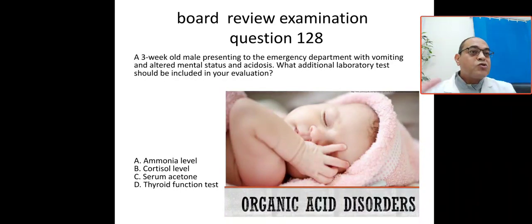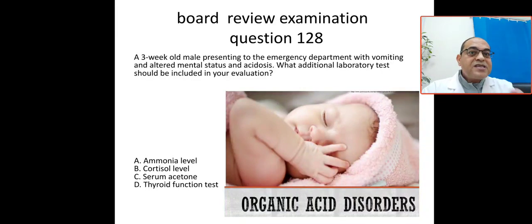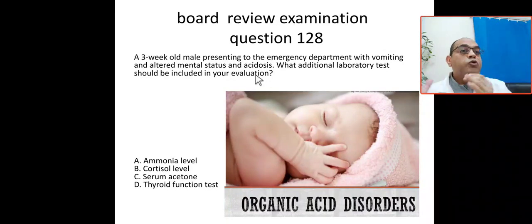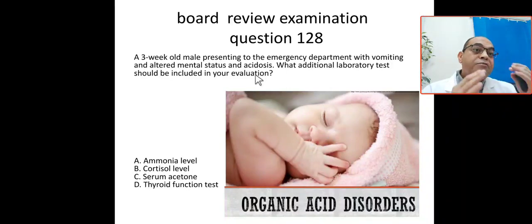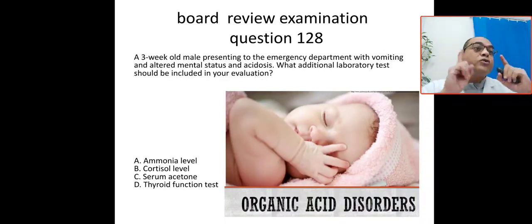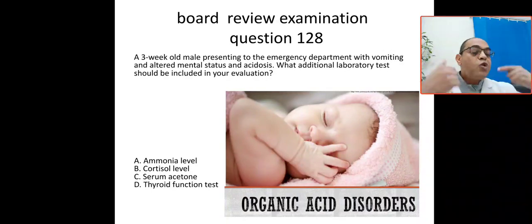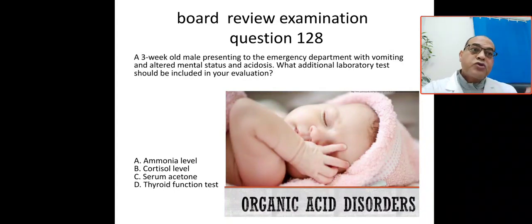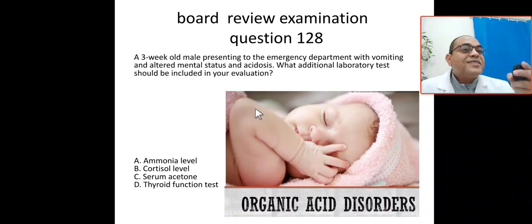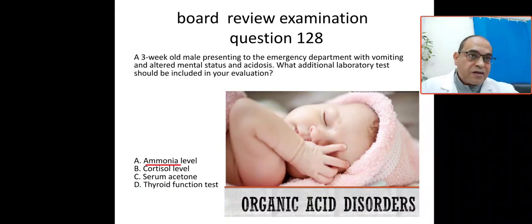This case likely represents an inborn error of metabolism because the presentation is non-specific and can involve CNS, cardiac, GI, or respiratory symptoms. Acidosis and altered mental status provide a clue toward inborn error of metabolism. The diagnosis requires a high index of suspicion, detailed family history including similar conditions, and newborn screening. To investigate, you need ammonia level and lactate.